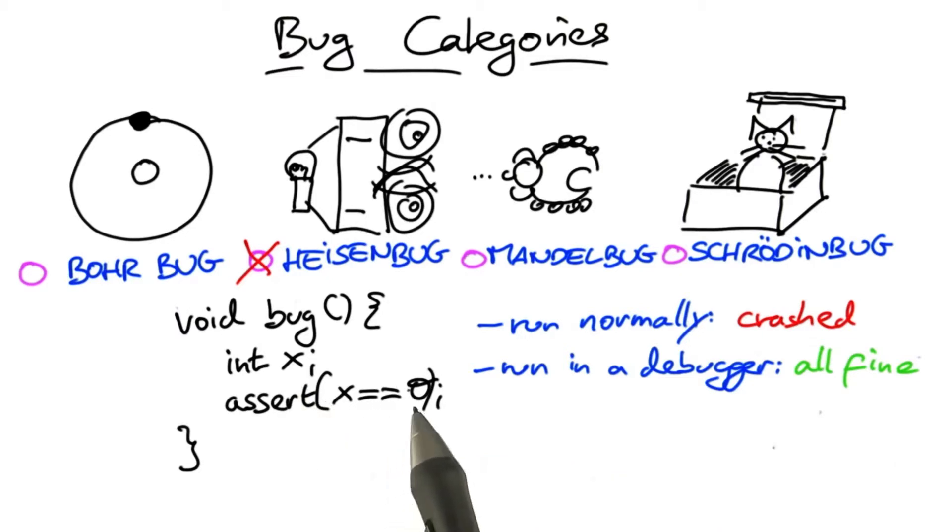And since the behavior is undefined, well, crashing was a perfect option. When executed normally, X would simply take whatever random value was on the stack, and therefore the assertion would fail.